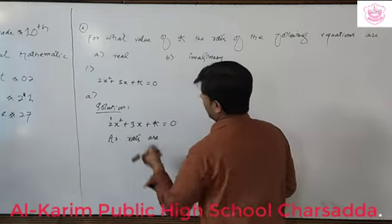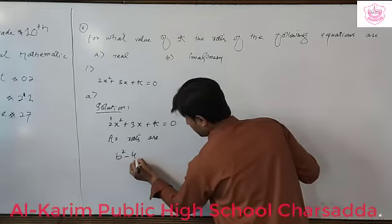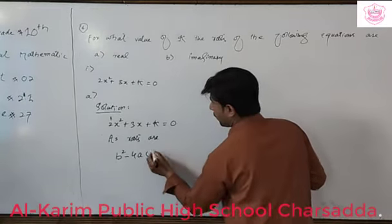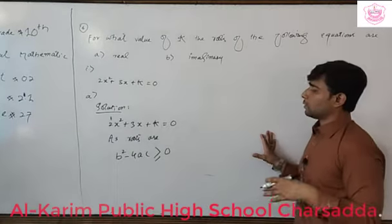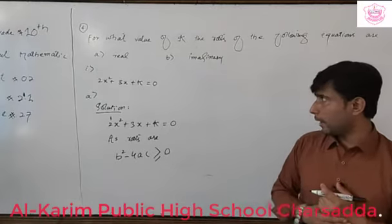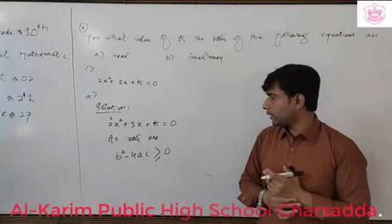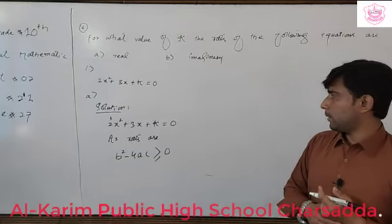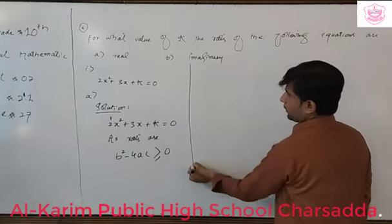It is given that the roots are real. When roots are real, the discriminant b square minus 4ac should be greater than or equal to zero. If the discriminant equals zero, both roots will be real, and if the discriminant is greater than zero, the roots will also be real.